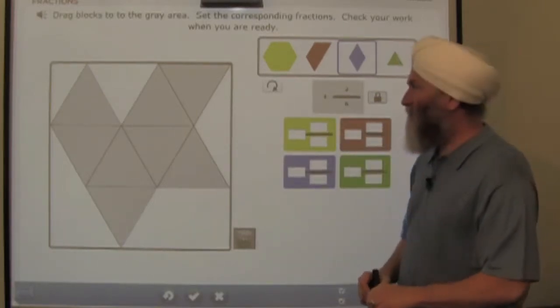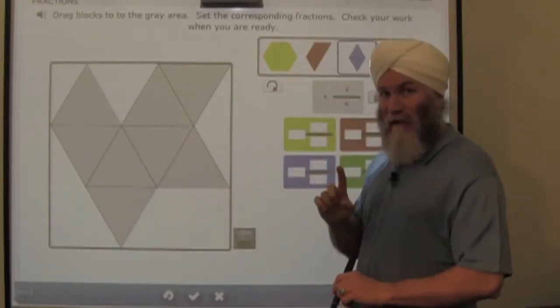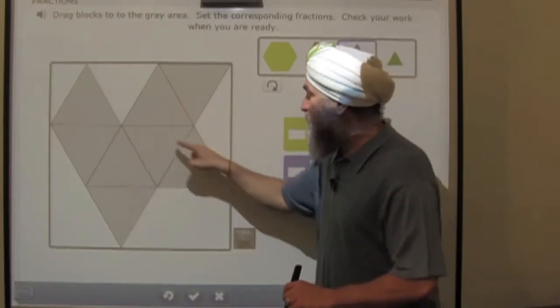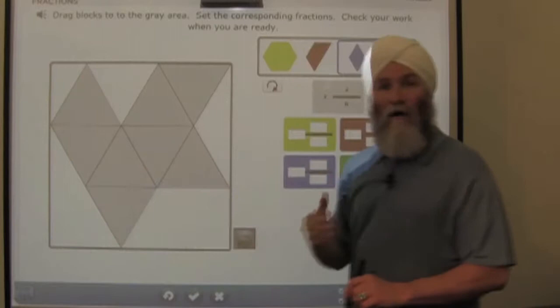Let's look at the shape. It has 1, 2, 3, 4, 5, 6, 7, 8 triangles. And I've decided that each one of these represents a sixth. 1, 2, 3, 4, 5, 6 of those are 1, and 2 are the 2 sixths.